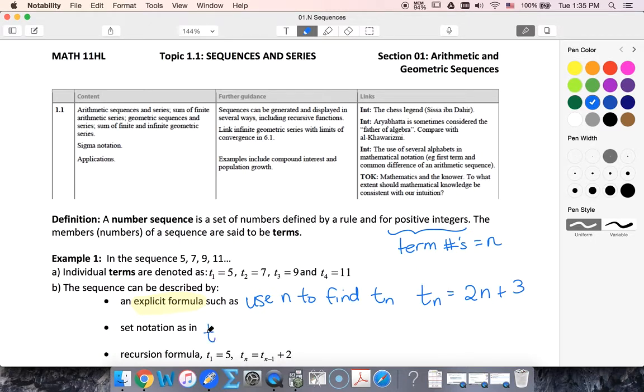Set notation. I could say t sub n is the set of numbers 5, 7, 9, dot dot dot.